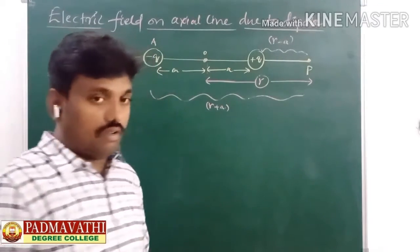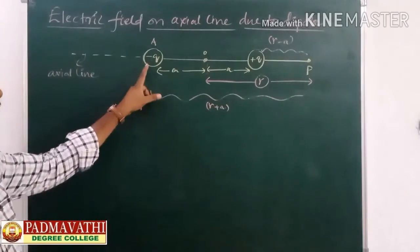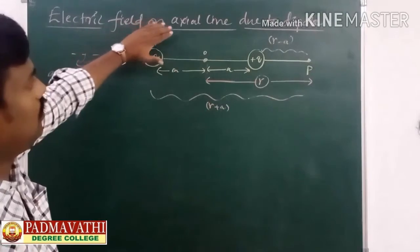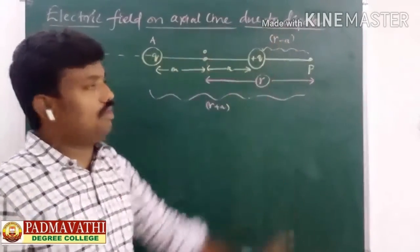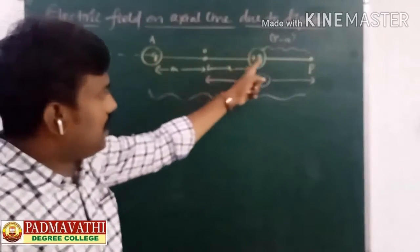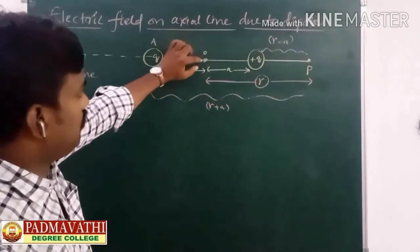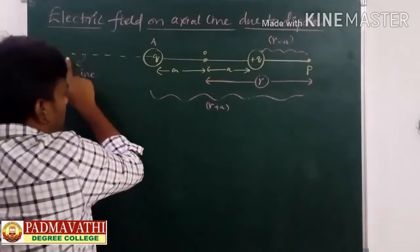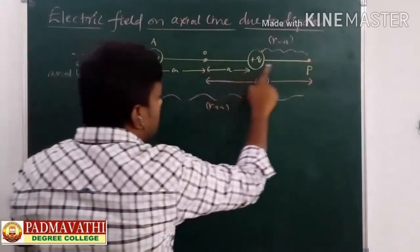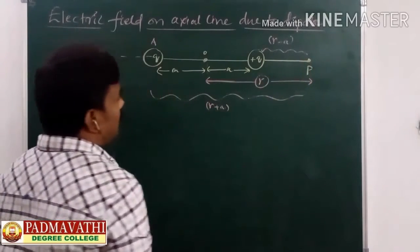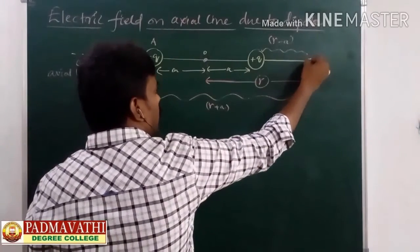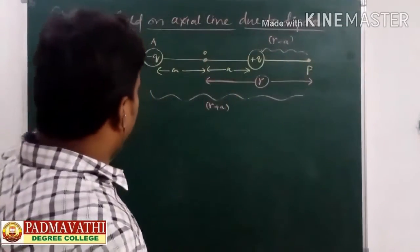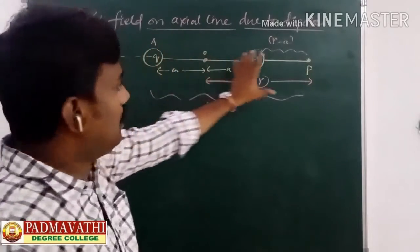For that purpose I am going to take an electric dipole. What we are going to find out is the electric field on the axial line due to an electric dipole. The dipole midpoint is O and the distance between the two poles is 2A. The line passing through the two charges is called the axial line. On this axial line I am going to choose a point P, and my intention is to determine the electric field at point P, which is on the axial line.